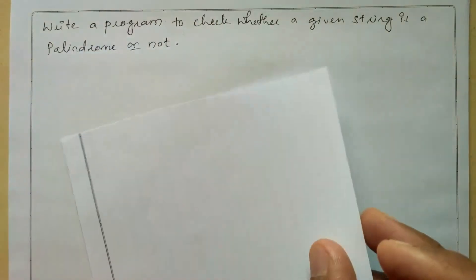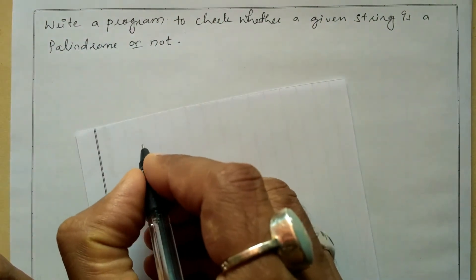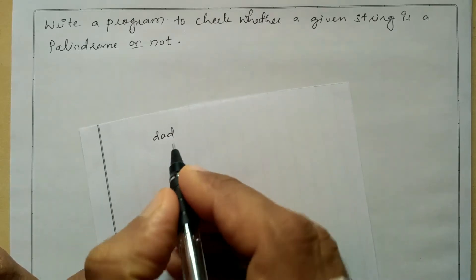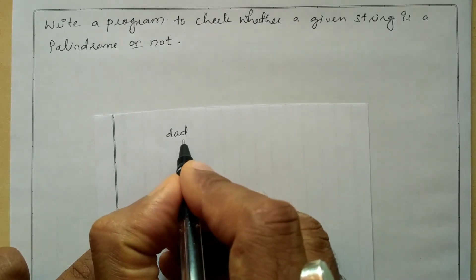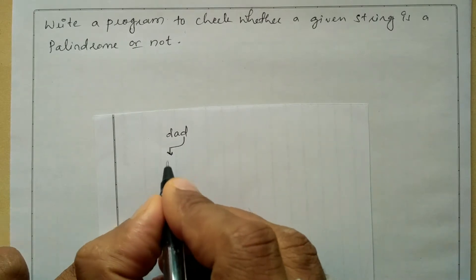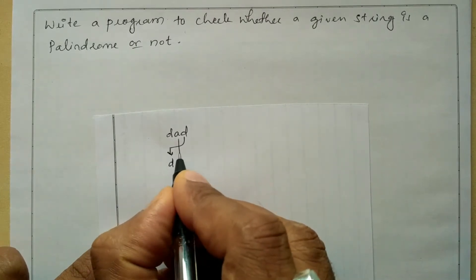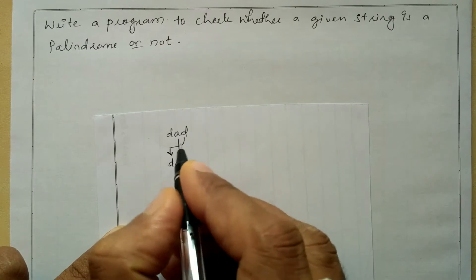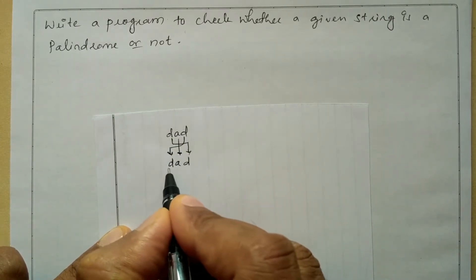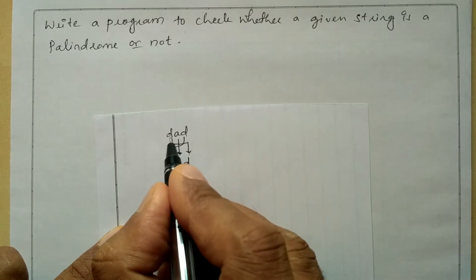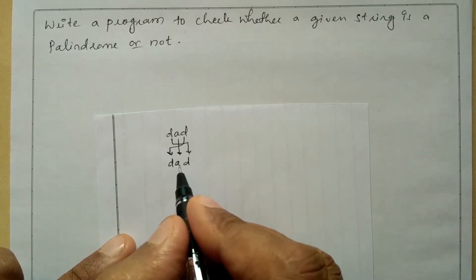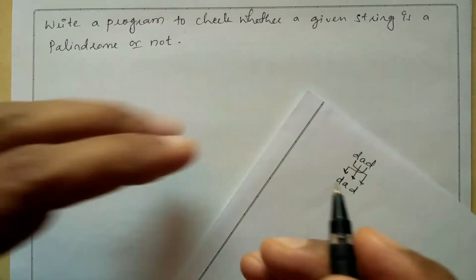Let us understand what we mean by palindrome. Here I'll write the string called 'dad'. If I reverse the characters of this string, the last D will come at the beginning, the A will come at the center, and the first D will come at the end. So after reversing the entered string, if we get the same string, then such a string is called a palindrome string.